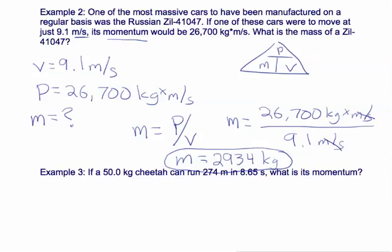Let's look at our last problem. We have a 50-kilogram cheetah, and we know kilograms is mass, can run 274 meters. Now, that's a distance. In 8.65 seconds, that's a time. What is its momentum?